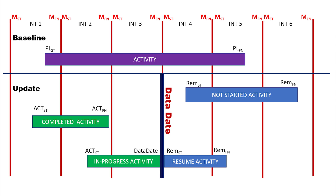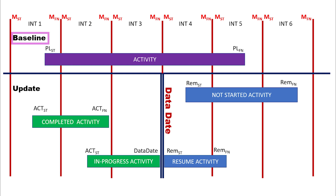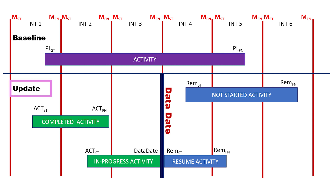In Planovera, the activity has two attributes. First, under baseline or planned value. Second, under update. Activity during baseline has only planned start and planned finish dates. But for activities under update, you should first have a data date for the schedule.